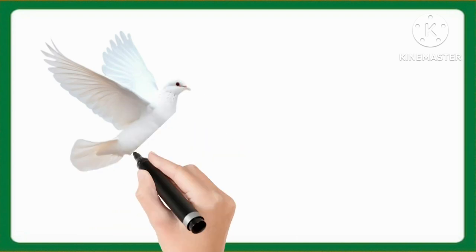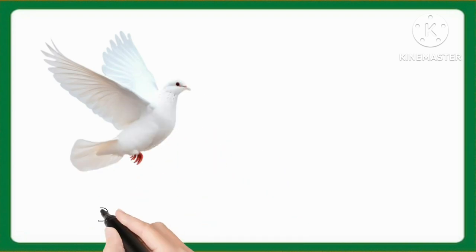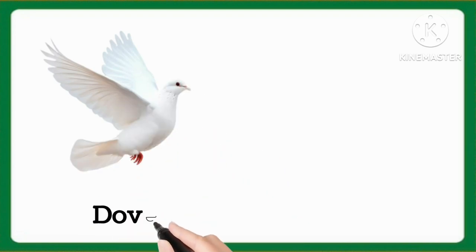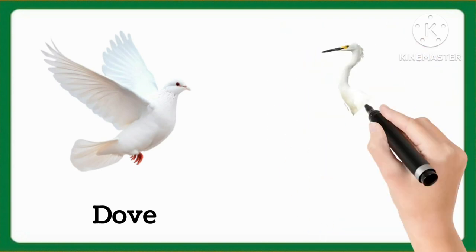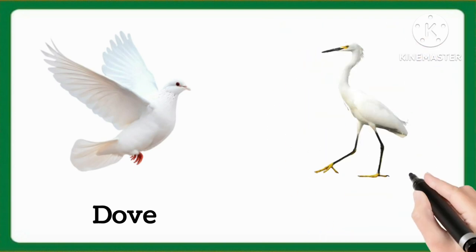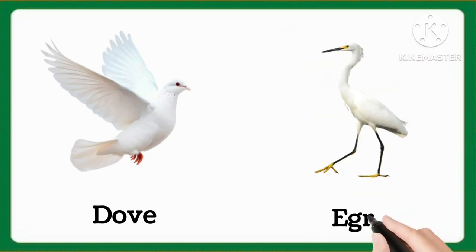And which word is this, kids? This is doe. Doe. And now tell me which word is this, kids? This is egret. Egret.